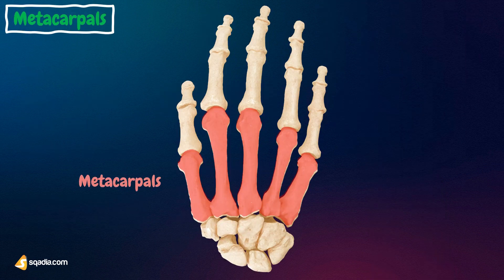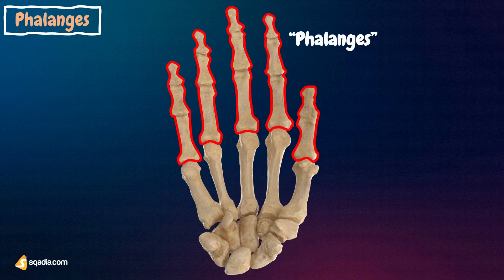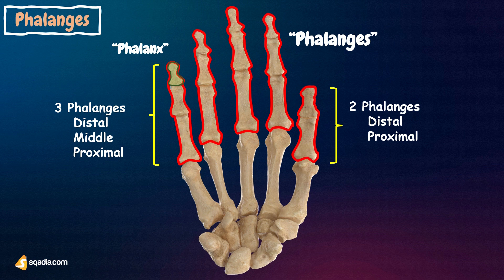Other bones of the hand are the metacarpals, the five bones that comprise the middle part of the hand. The phalanges (singular: phalanx) are the fourteen narrow bones that make up the fingers of each hand. Each finger has three phalanges — the distal, middle, and proximal — while the thumb has only two.